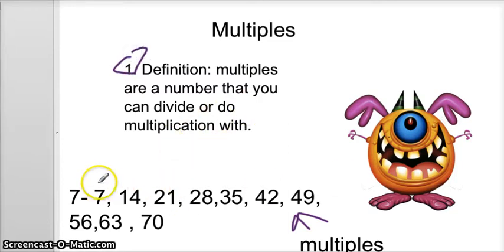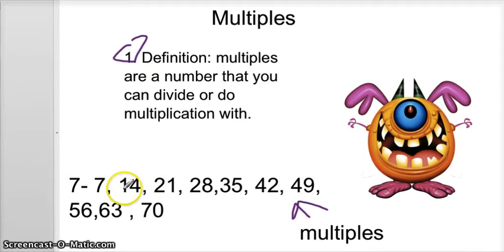And then you see these numbers down here. It's the multiples of seven: seven, fourteen, twenty-one, twenty-eight, thirty-five, forty-two, forty-nine, fifty-six, sixty-three, and seventy. And you're probably wondering why there's this big, really ugly monster. He's the multiple monster. He makes numbers bigger, because you know how monsters are really big.